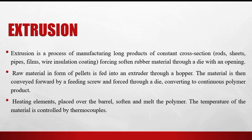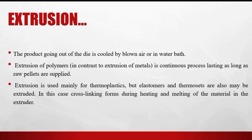In extruders, the raw material is conveyed forward by a feeding screw which forces it to the desired shape. Heating elements provide heat to melt the raw material. The product going out of the die is cooled by blown air or in a water bath. The extrusion of polymer is a continuous process; it is usually used for thermoplastics but also for elastomers and rubber.